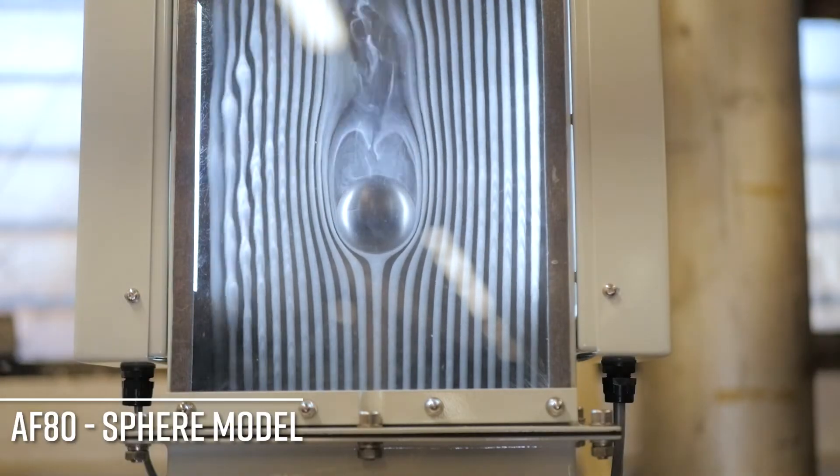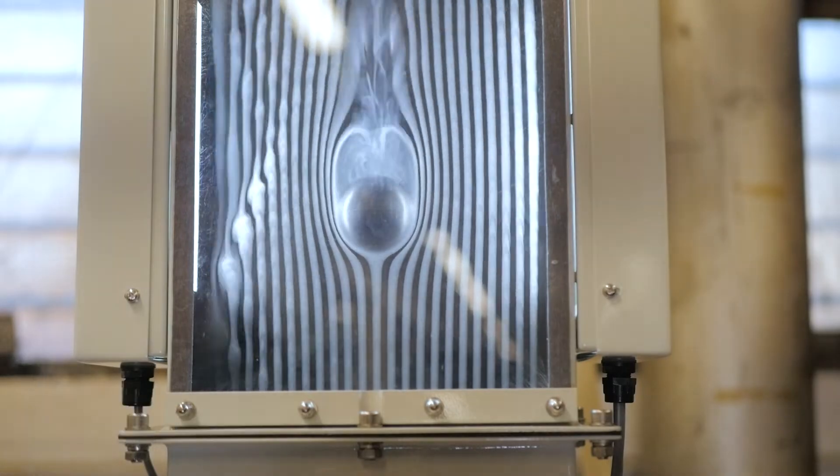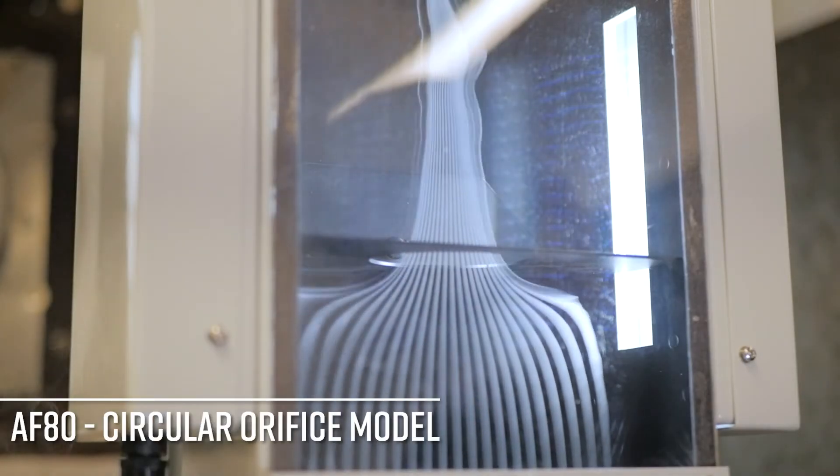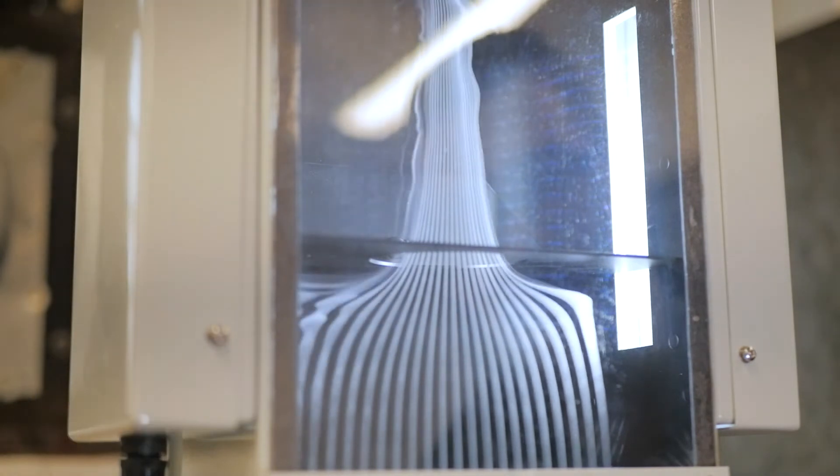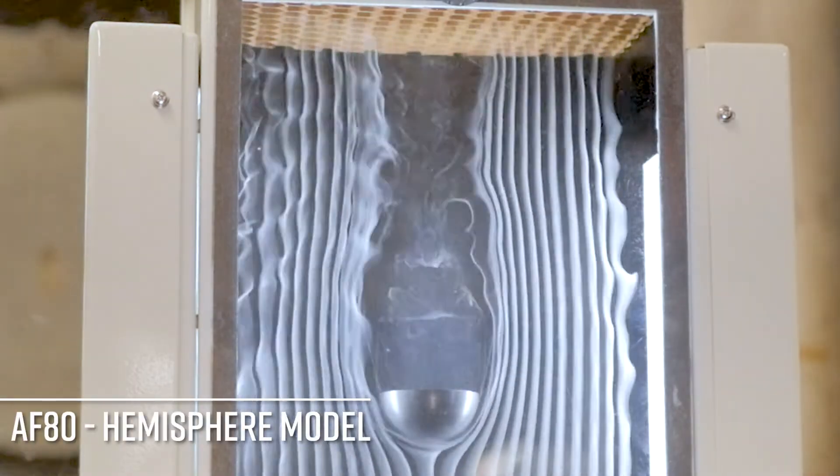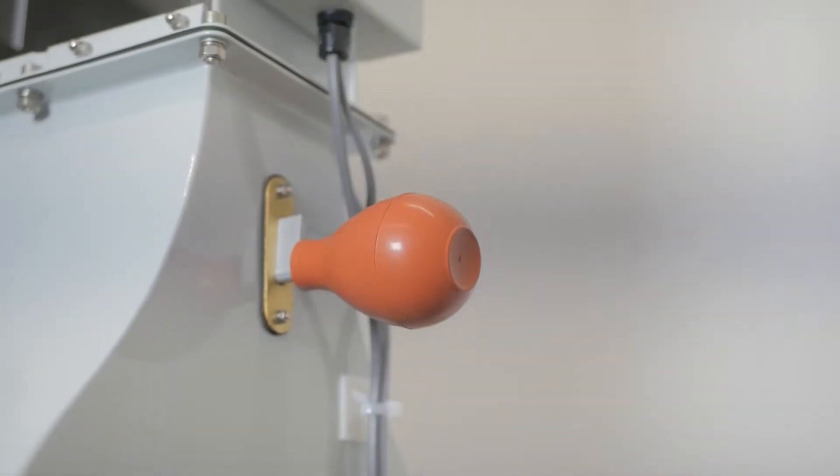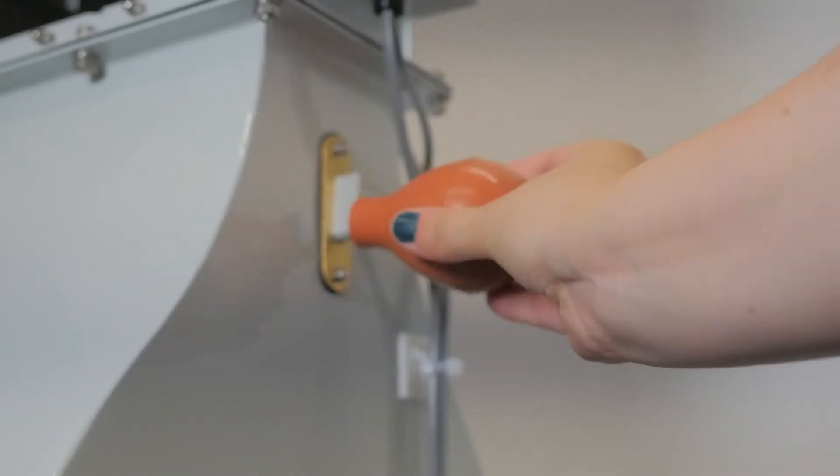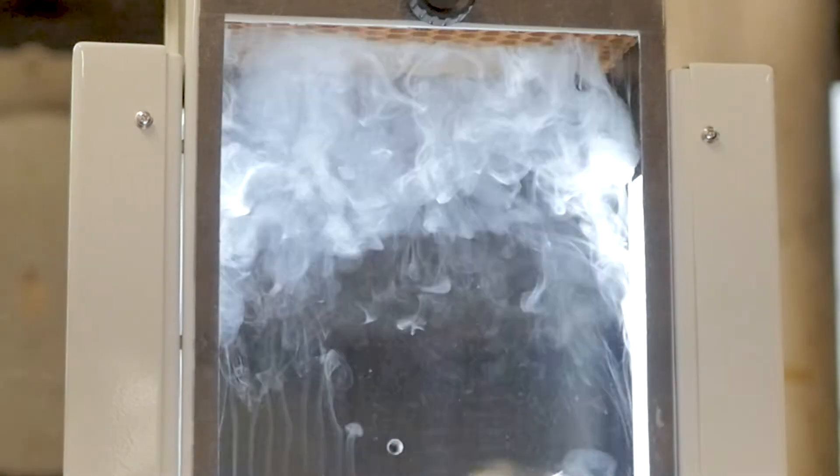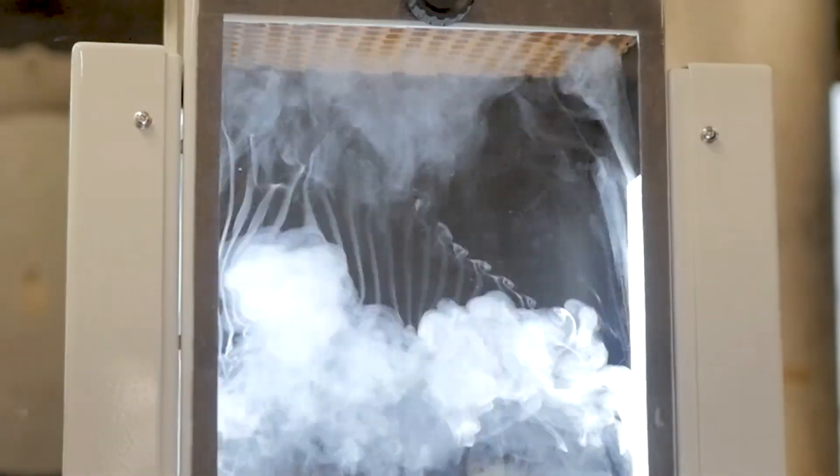Under the working section is the adjustable smoke comb that produces 23 streams of smoke at 7mm centres. Below this is the contraction cone and smoke comb clearing bulb, a large bulb shaped handle that may be squeezed to help clear any blockages that may occur in the smoke comb holes.